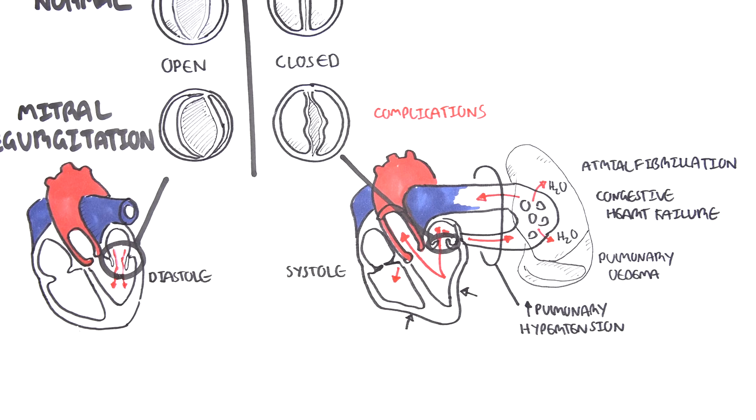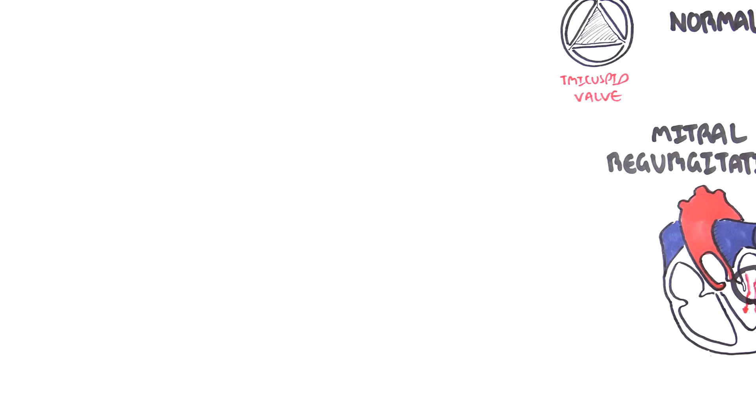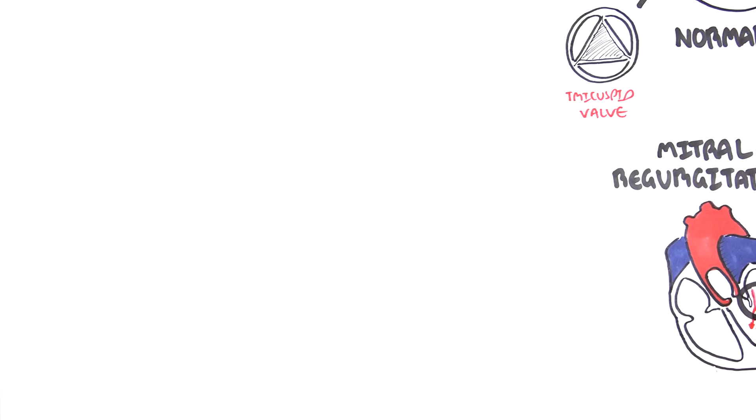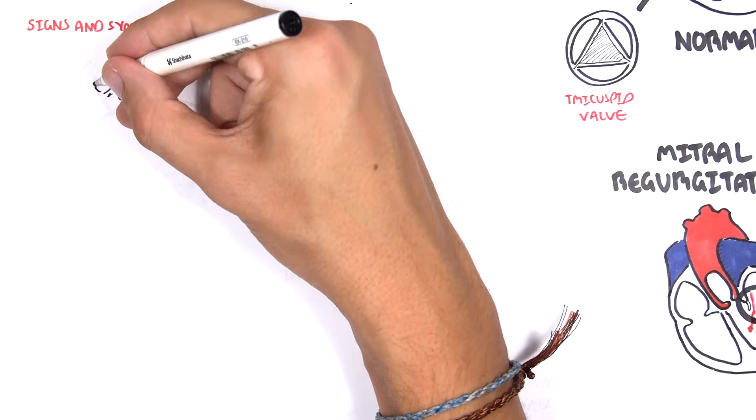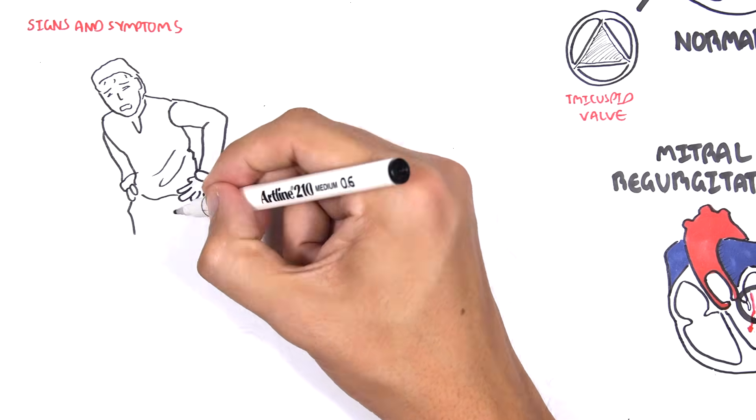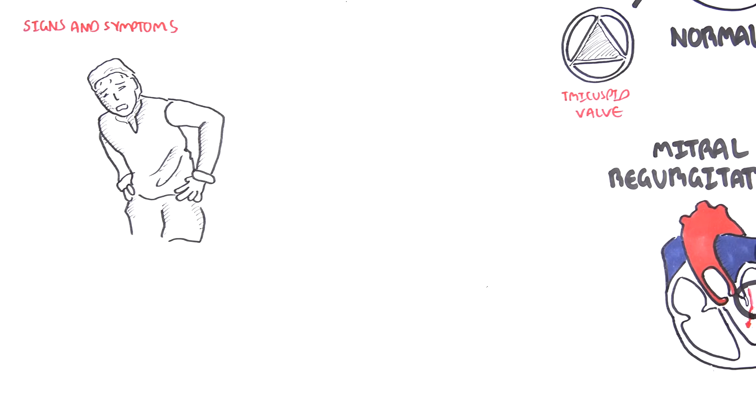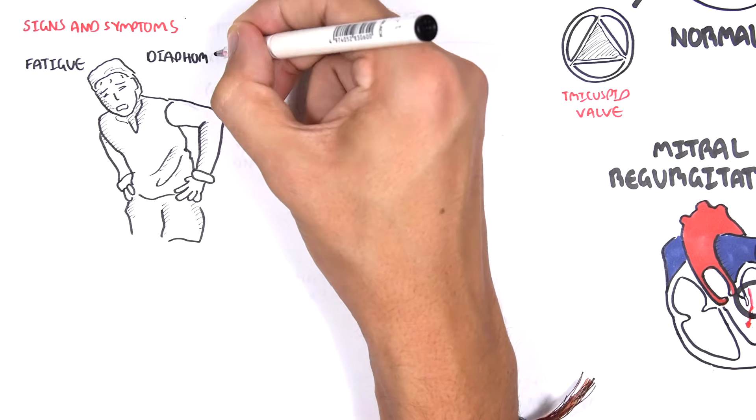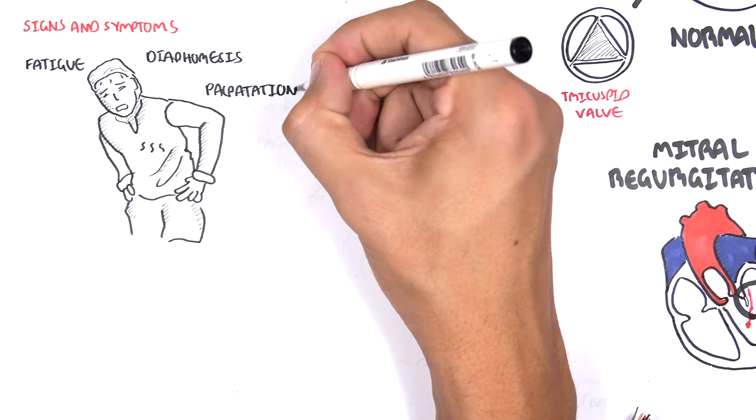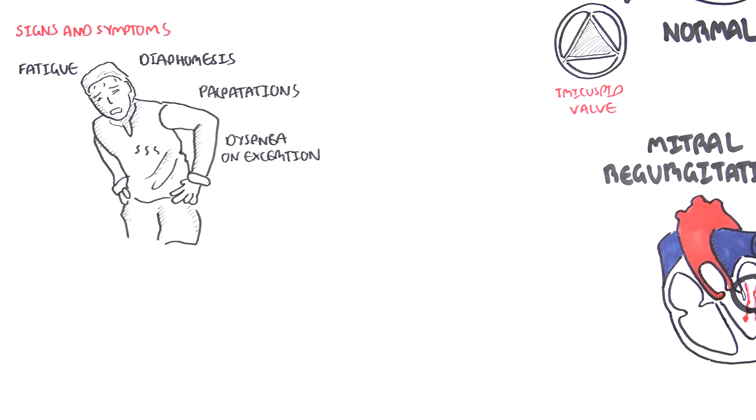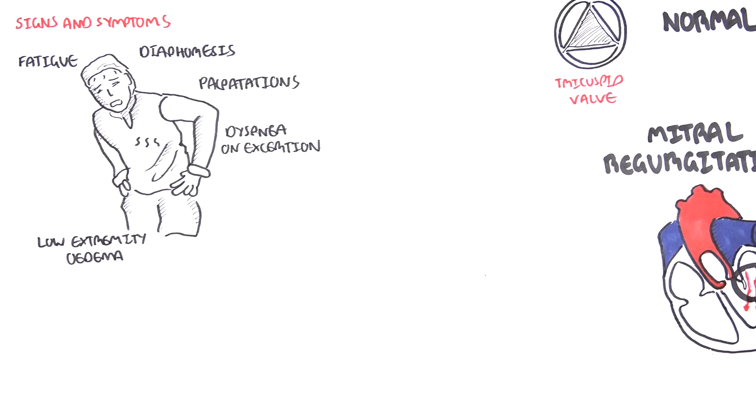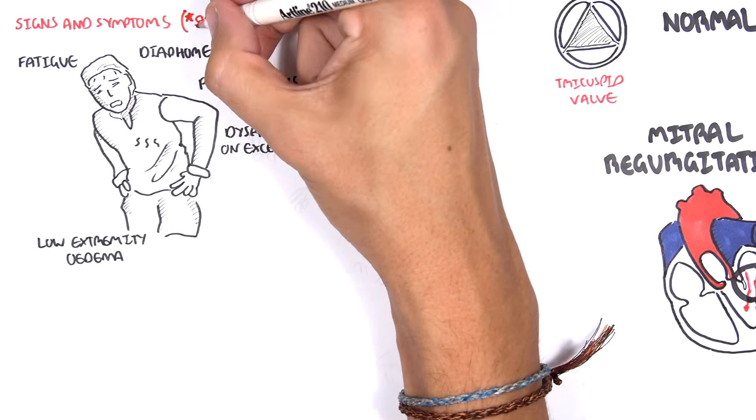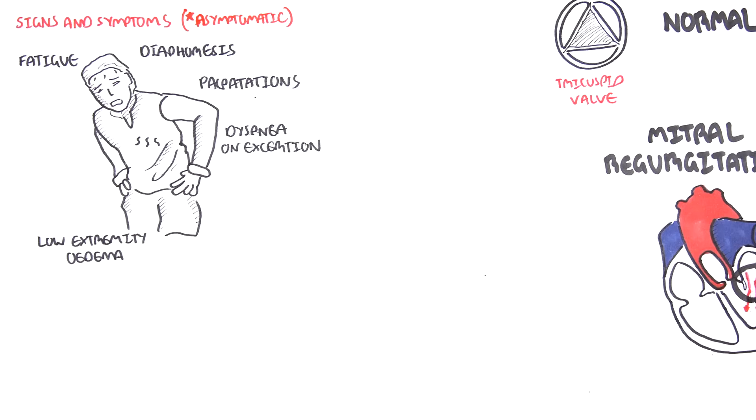Mitral regurgitation can be acute or chronic. Acute mitral regurgitation tends to be more aggressive because of the sudden onset. Some signs and symptoms of acute mitral regurgitation include fatigue, diaphoresis, palpitations, dyspnea on exertion, and lower extremity edema. Chronic mitral regurgitation may be asymptomatic until it becomes bad.